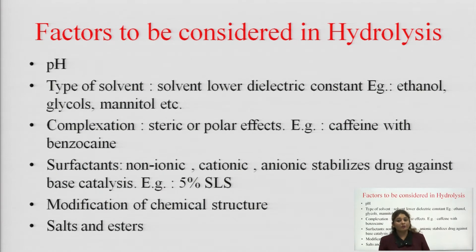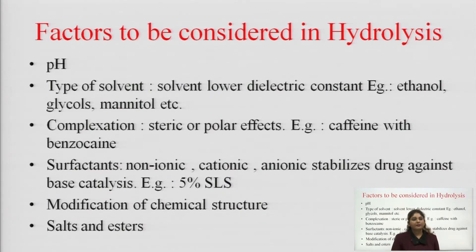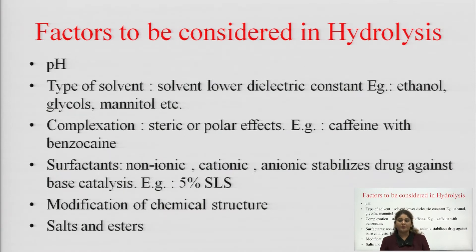What are the different factors to be considered when studying hydrolysis? First is pH — we have to consider pH because pH provides the acid or alkali group, supplying H and OH ions, in whose presence the drug can undergo hydrolysis. Next is the type of solvent. Solvents such as ethanol, glycerol, and mannitol, which contain OH groups, also contribute OH ions.